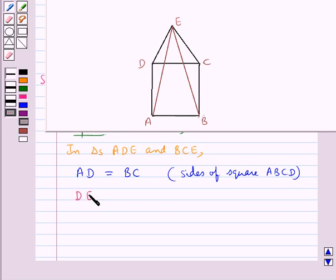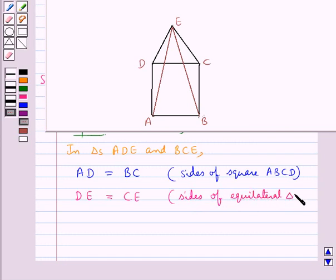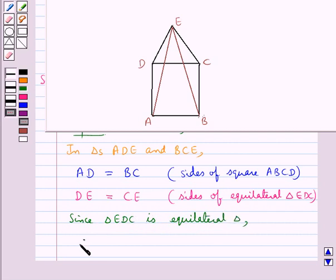Then side DE of triangle ADE is equal to side CE of triangle BCE, since they are the sides of equilateral triangle EDC. Since triangle EDC is an equilateral triangle, all its angles are of measure 60 degrees. That is, angle EDC is equal to 60 degrees.